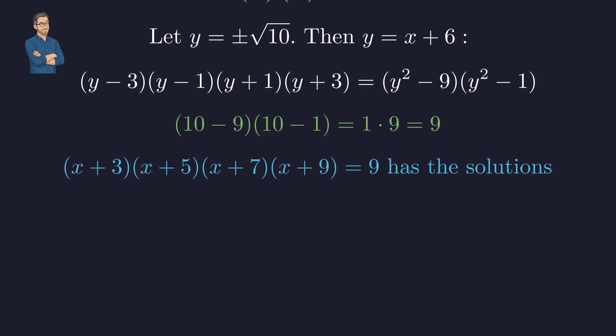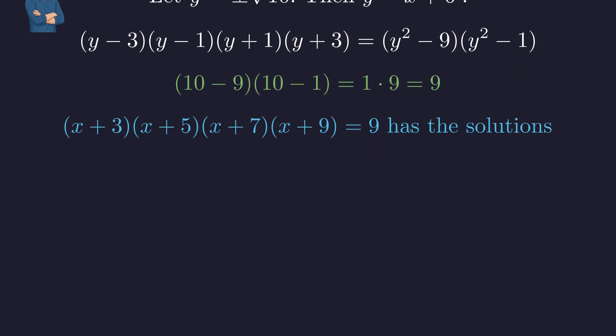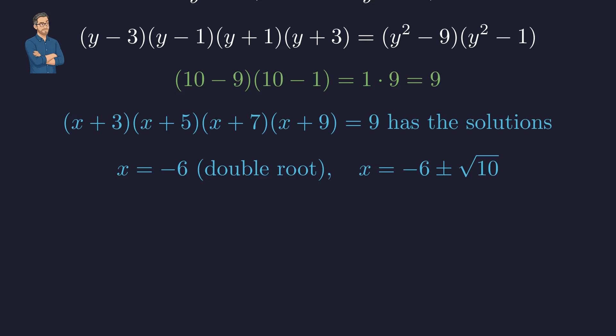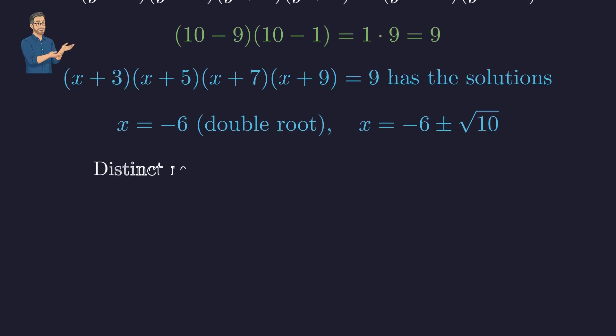To summarize our complete solution, x = -6 as a double root and x = -6 ± √10. Distinct real solutions: x = -6 and x = -6 ± √10.